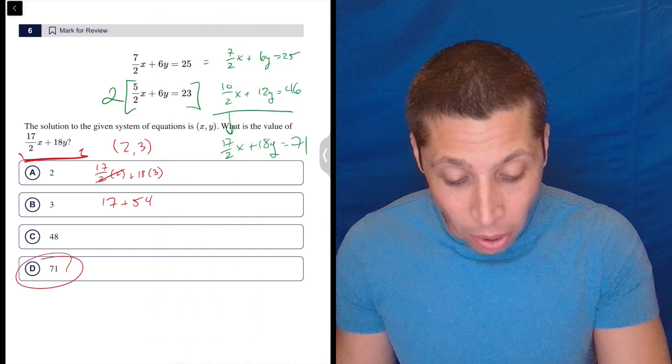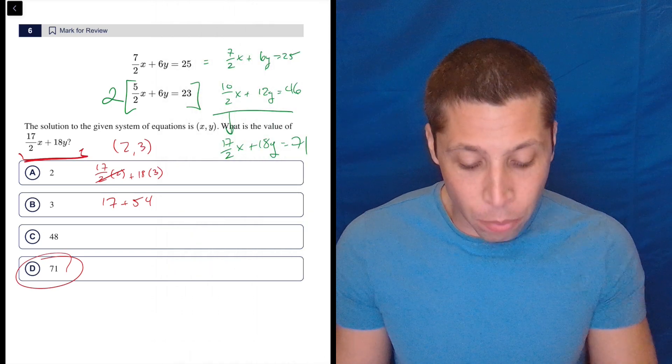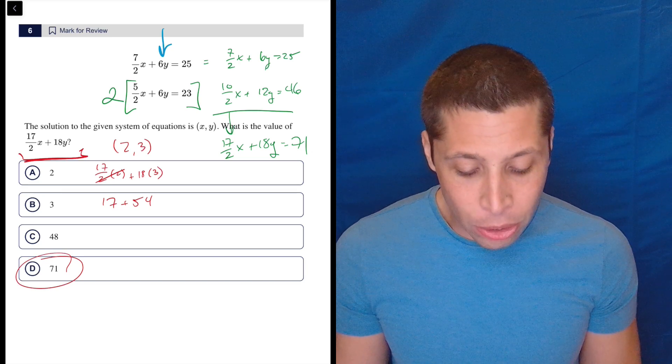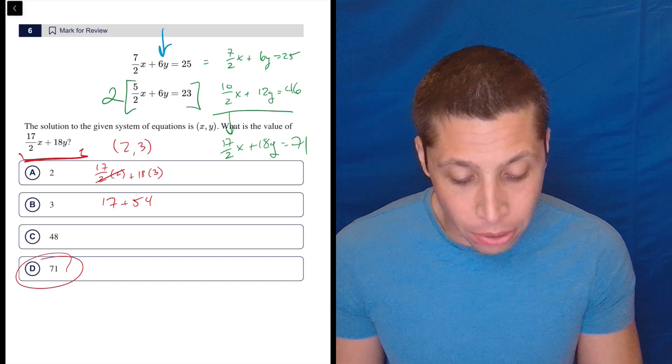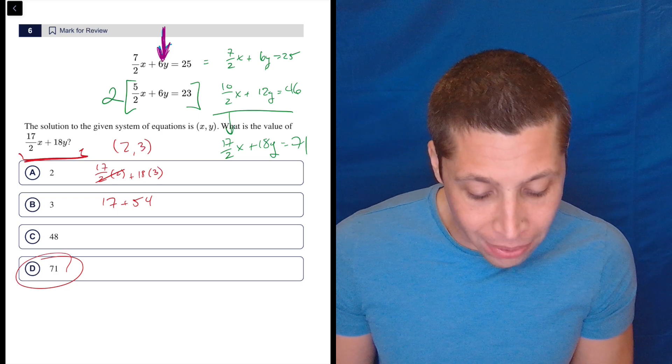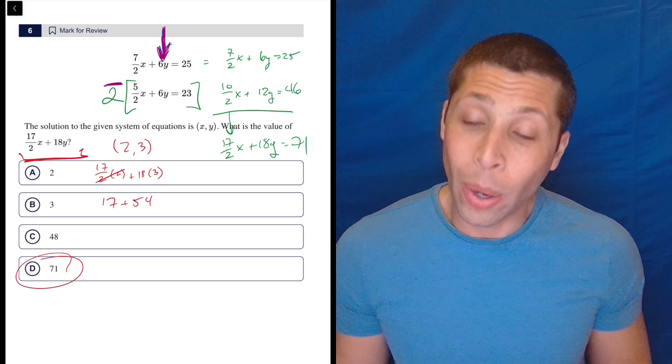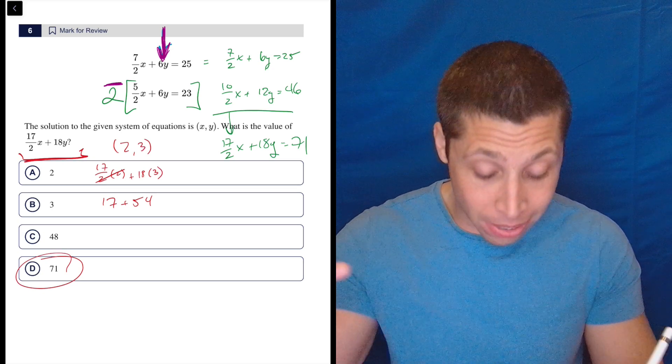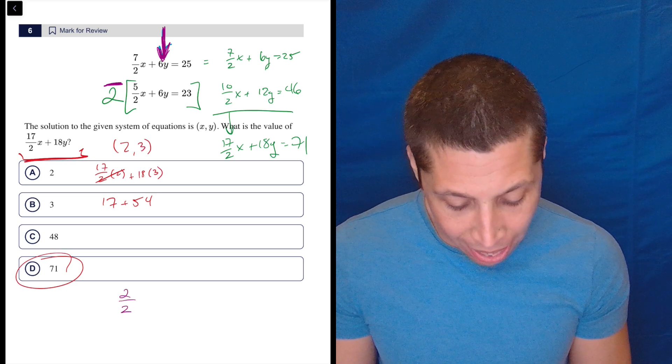Now, others of you are going to do this in a much more traditional way where you kind of recognize that the 6y's will cancel out if we do some subtraction, right? If I subtracted this second equation from the top one, I would end up with 7 halves x minus 5 halves x is 2 halves x. The 6y's cancel and 25 minus 23 is 2.